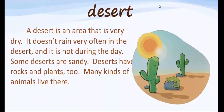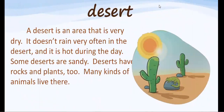The first word is the word desert. A desert is an area that is very dry. It doesn't rain very often in the desert and it is hot during the day. Some deserts are sandy. Deserts have rocks and plants too.